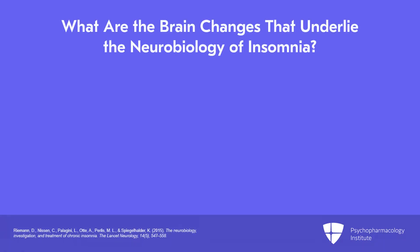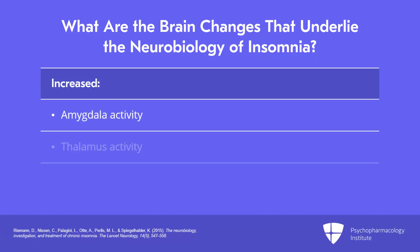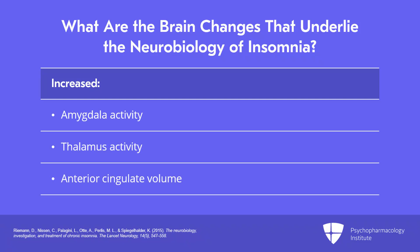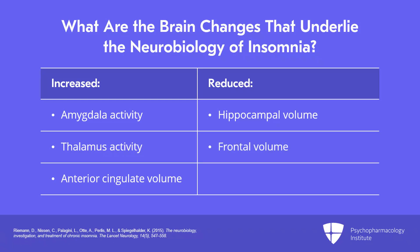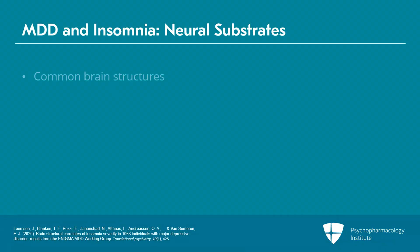What are the key brain changes that underlie the neurobiology of insomnia? Insomnia disorder has been associated with increased activity of brain structures including the amygdala and thalamus, and increased anterior cingulate volume. Additionally, reduced hippocampal volume, reduced frontal volume, reduced recruitment of the caudate nucleus has been associated with insomnia disorder. Notably, some of these brain structures are common neural substrates for major depressive disorder as well.